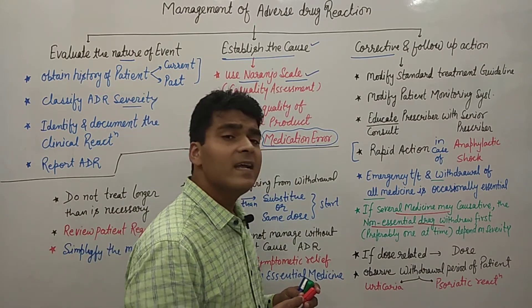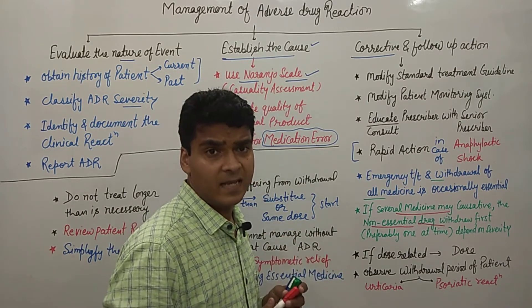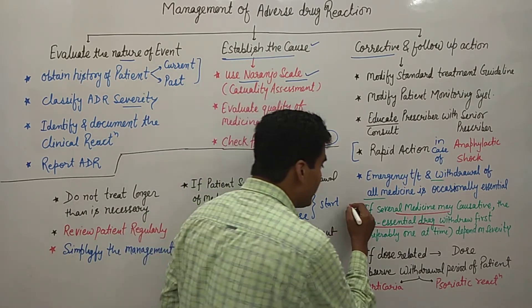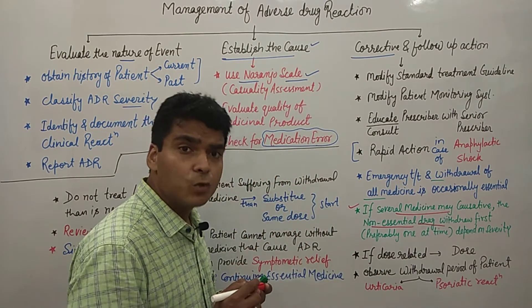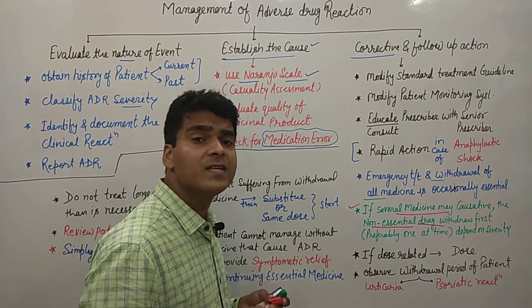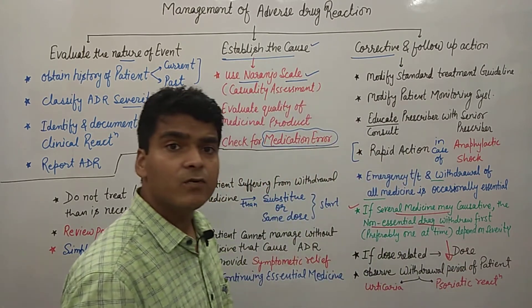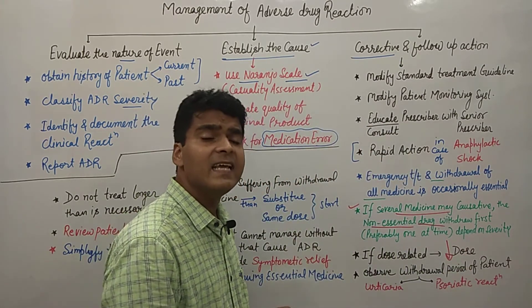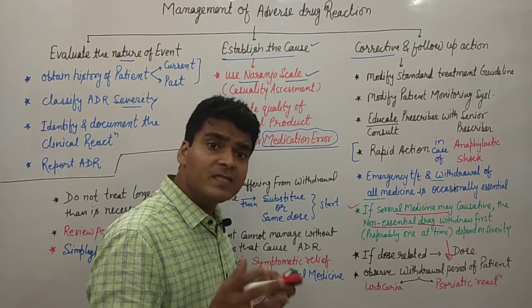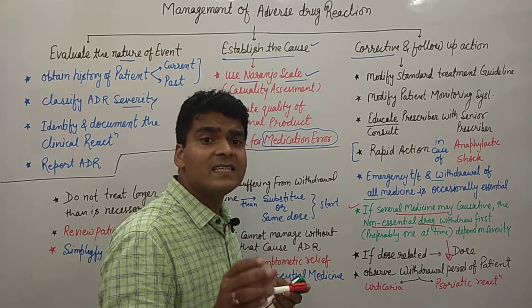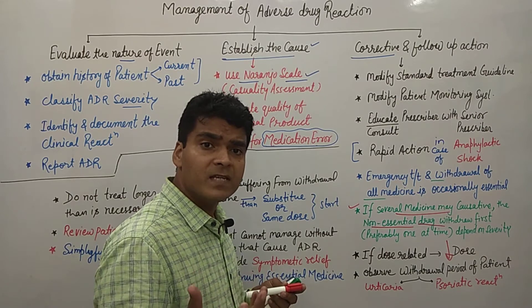Drug removal should preferably be done one at a time, depending on the patient's condition, and the doctors will make the decision accordingly. If the adverse drug reaction is dose-related, then the dose needs to be decreased, the frequency of the drug should be reduced, and the doctor should check whether the ADR is caused by a cumulative dose.